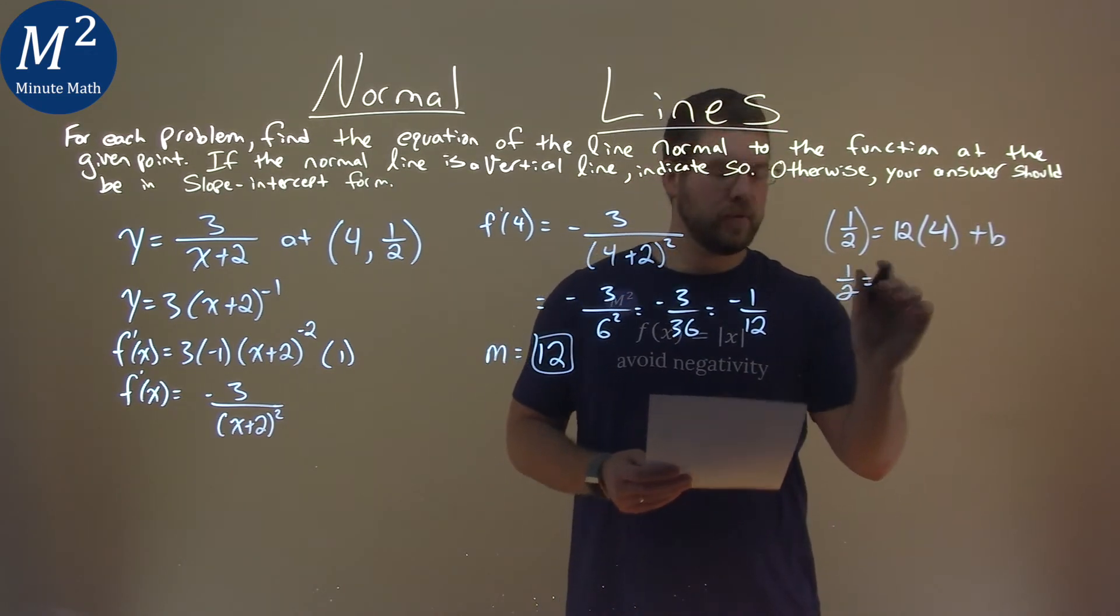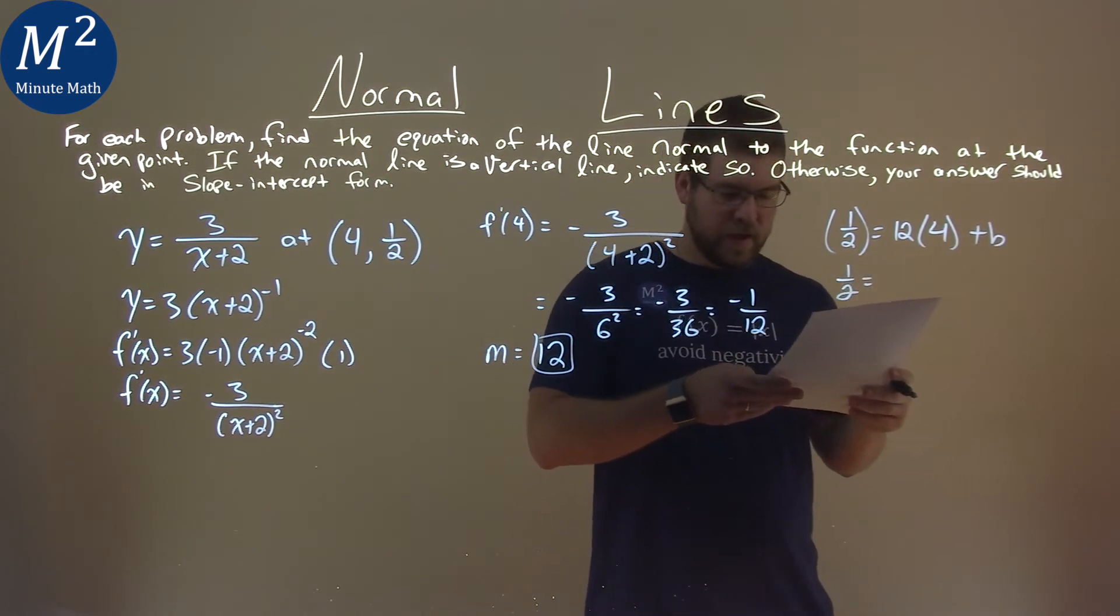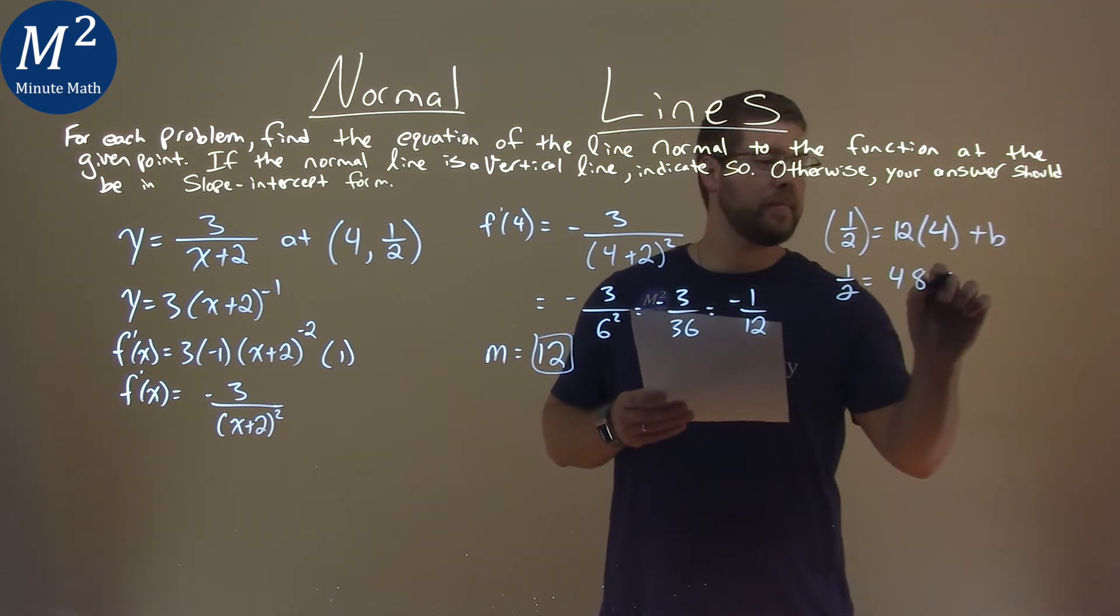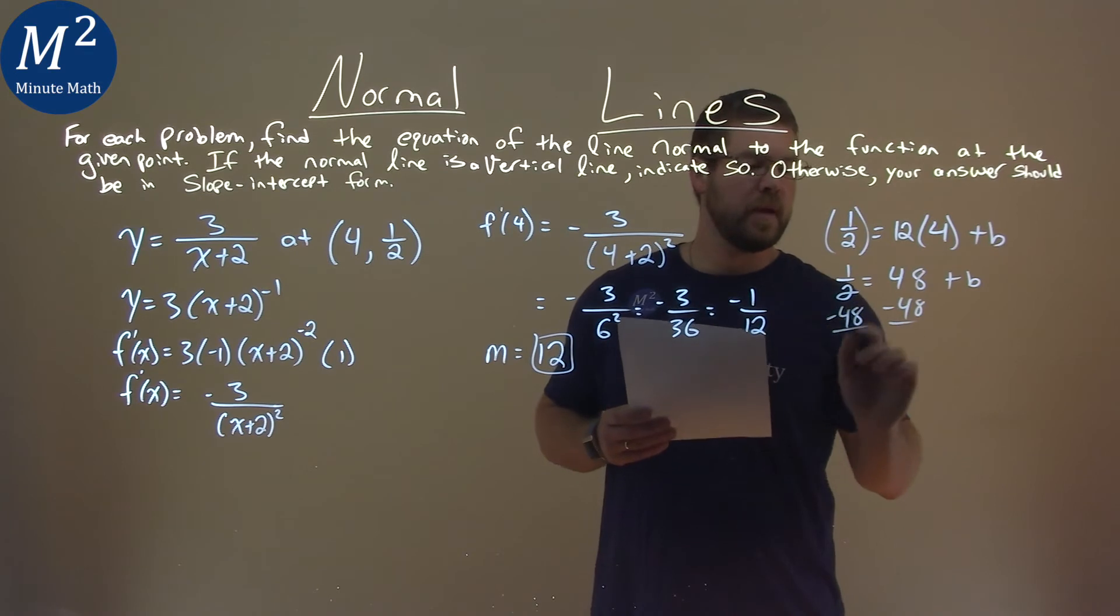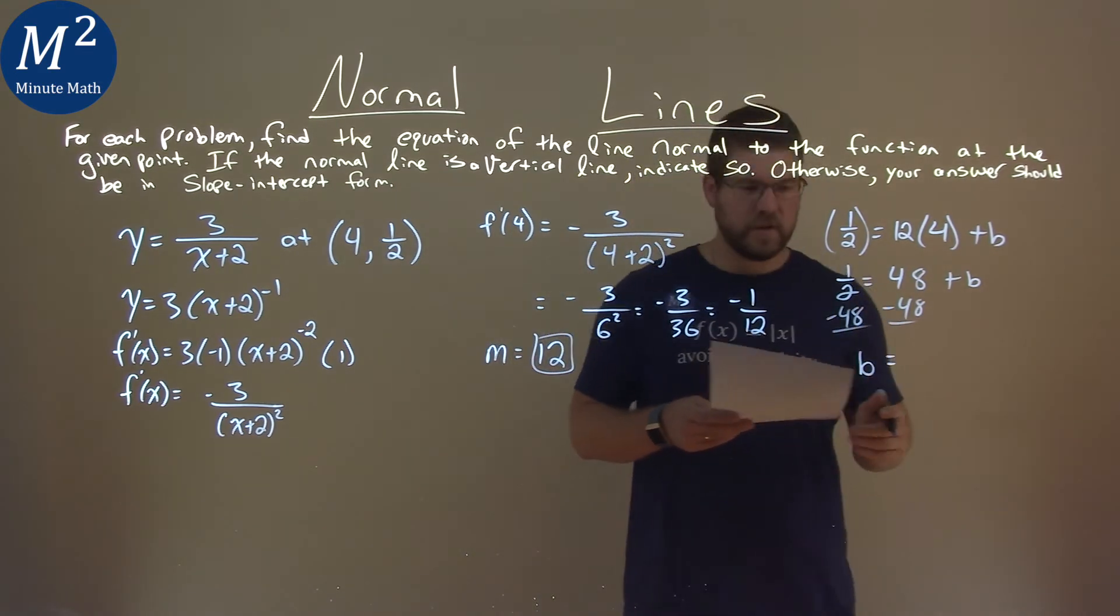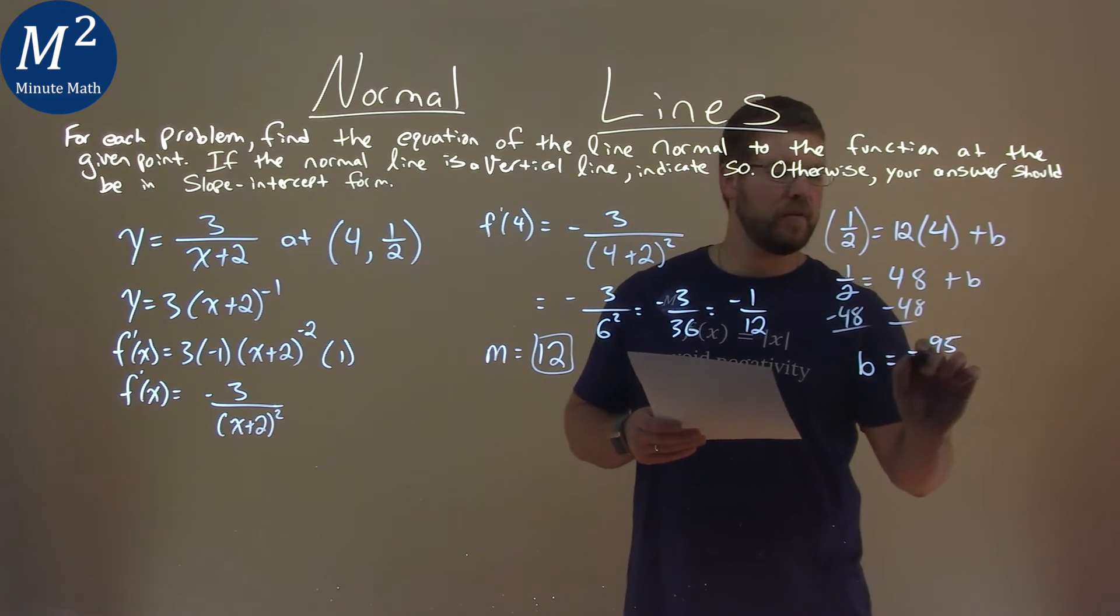1 half equals 12 times 4, which is 48 plus b. We subtract the 48 to both sides, and I did the math for you. b is equal to 1 half minus 48, which is negative 95 over 2.